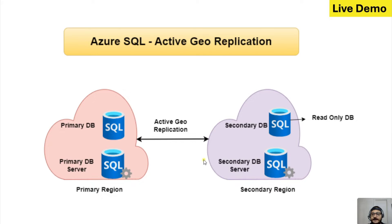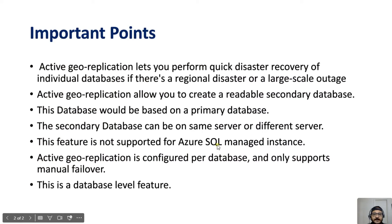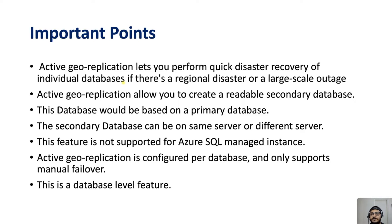There are a few important points to understand. Active Geo Replication lets you perform quick disaster recovery of individual databases. As discussed, it is a database-level feature — if you have four databases, then you have to create four Active Geo Replication configurations, one for each database.